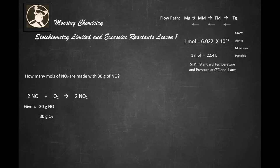Hi, welcome back to Moosing Chemistry. This is Stoichiometry: Limited and Excessive Reactants, Lesson 1. It's going to be a lot of work, so just be patient as we work through this together. We need to remember that 1 mole equals 22.4 liters at STP (standard temperature and pressure) at 0°C and 1 atm.